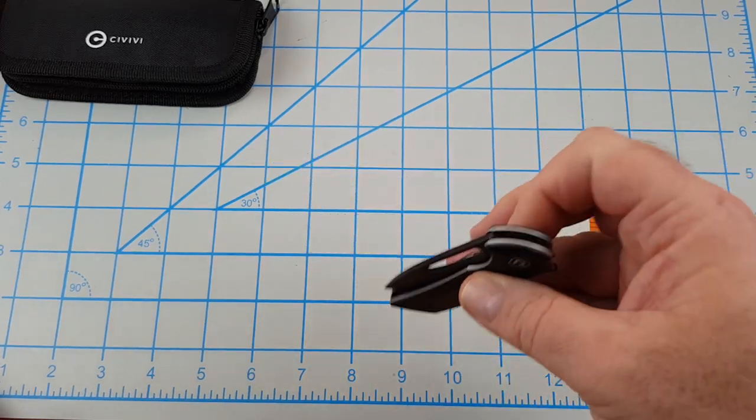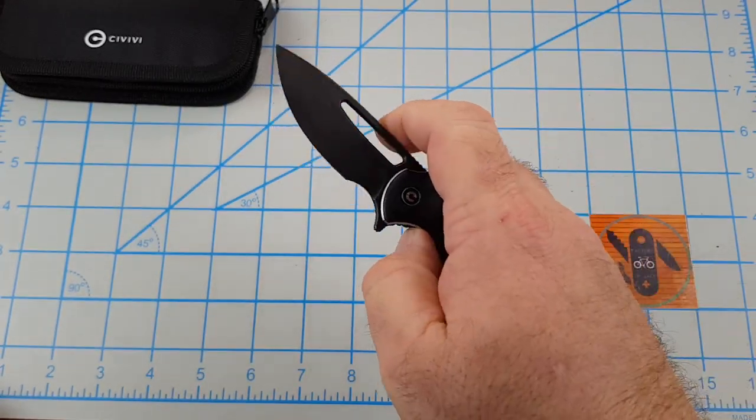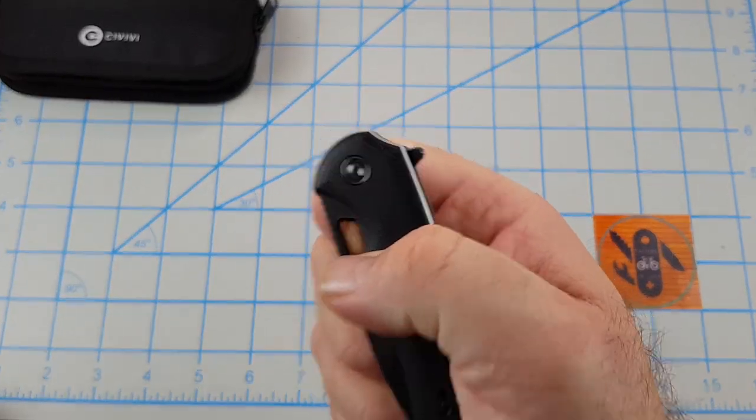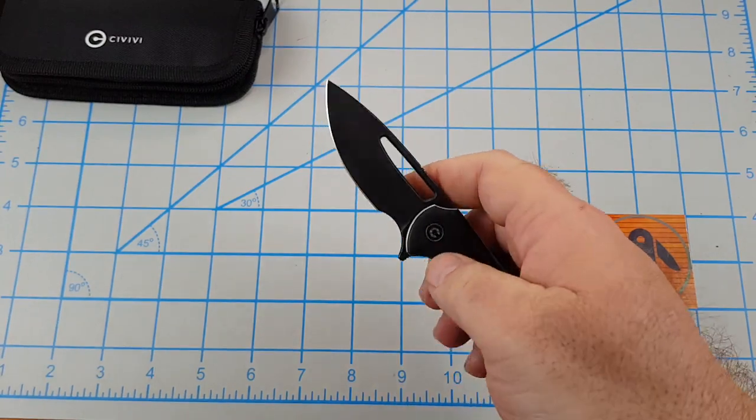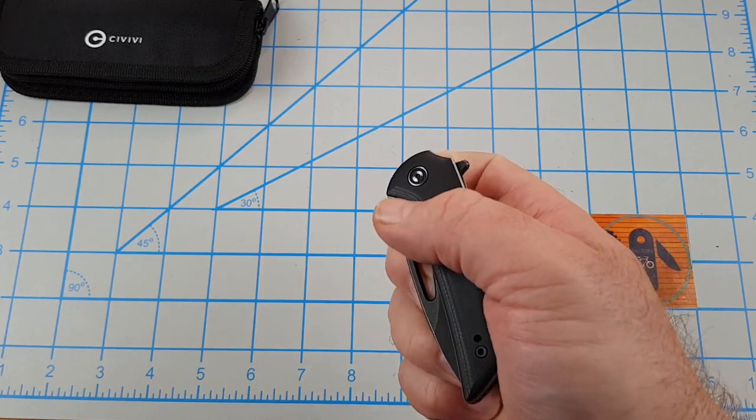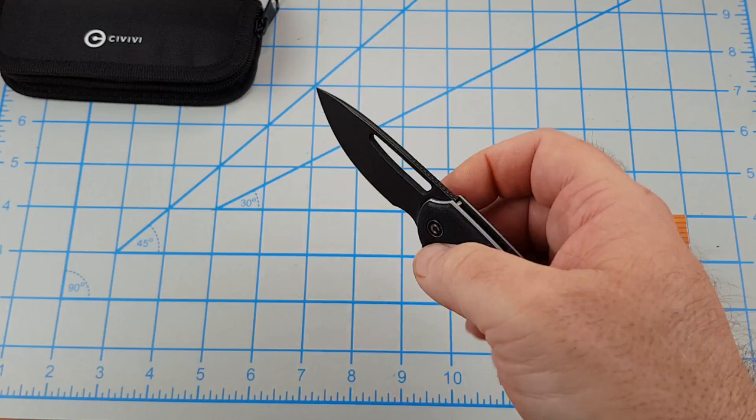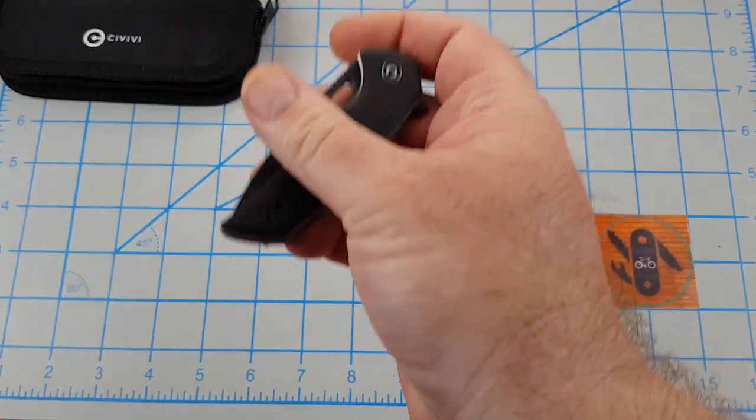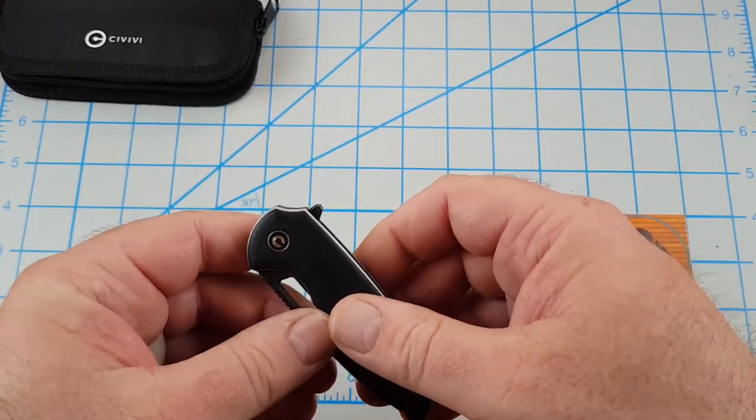It's got a small flipper tab with some jimping on it. That's the easiest way to open it for me. This hole you can definitely use. You can thumb flick it or reverse finger flick it. This is pretty small, I'm having a hard time middle finger flicking it. I can do it but not very good. I feel like I'm going to throw it right in my hand.